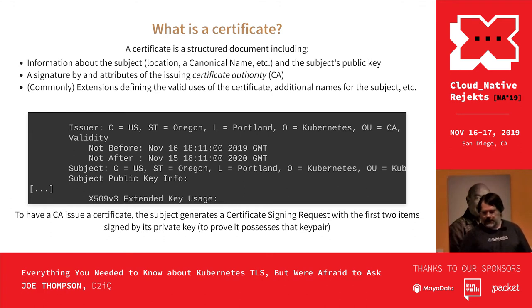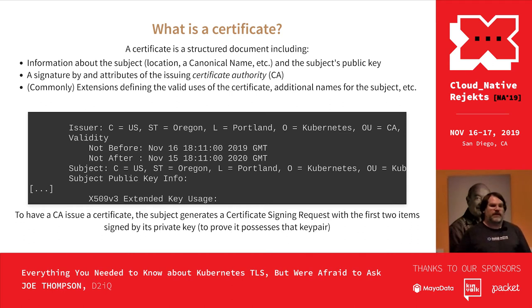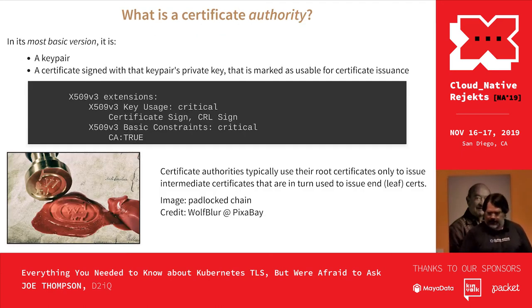To have the CA issue a certificate, you generate your public key, generate a certificate signing request with all the info in the certificate, sign it with your key, and send it to the CA. They sign it with their key and send you back a certificate, and you're in business.